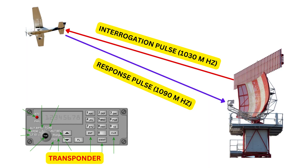Secondary radar additionally transmits an interrogation pulse at a frequency of 1030 megahertz. Aeroplanes are equipped with an equipment called transponder. Having received the interrogation pulse after a fixed delay, the transponder transmits the response pulse at a frequency of 1090 megahertz, which is received back at the radar.